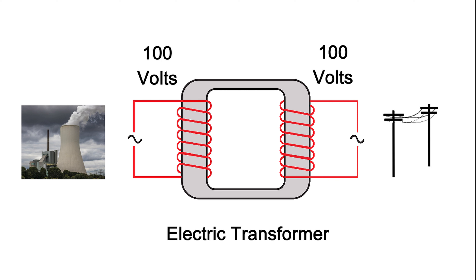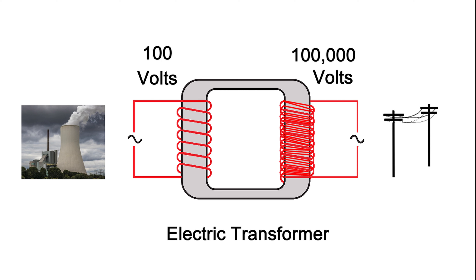Voltage does not get quite as bogged down as current does. The magic of the transformer and the AC system is that you can increase the secondary side with many more turns of coil to increase the voltage and decrease the amperage or current. You can send a hundred thousand volts with a very tiny amount of current over several miles of wire. What you're looking at is a step-up transformer — once it gets to your house, it gets stepped down.